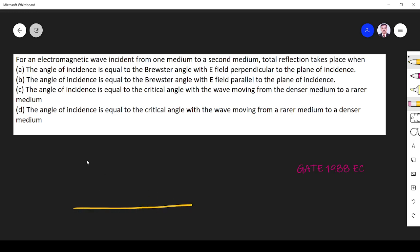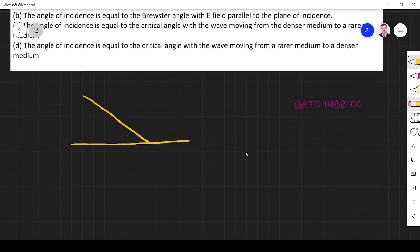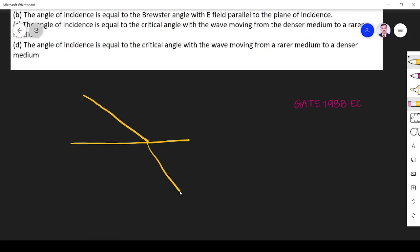We studied from school days itself that when an electromagnetic wave propagates from one medium to another medium, reflection takes place. This is medium one, this is medium two. For light, which is also an electromagnetic wave...